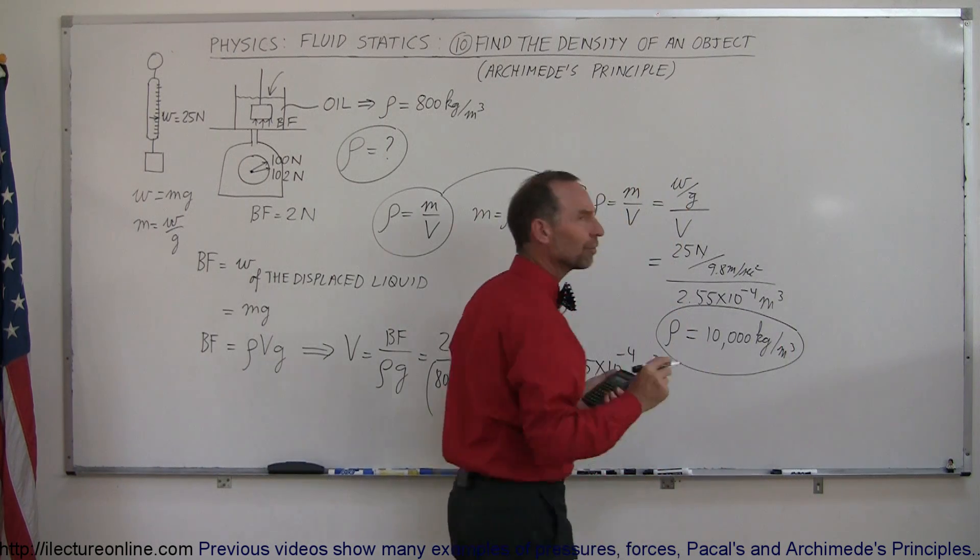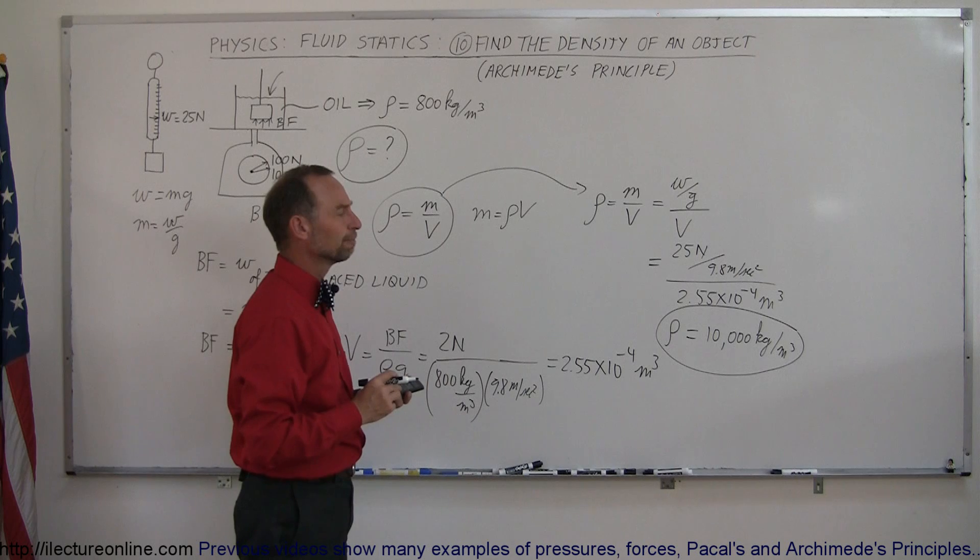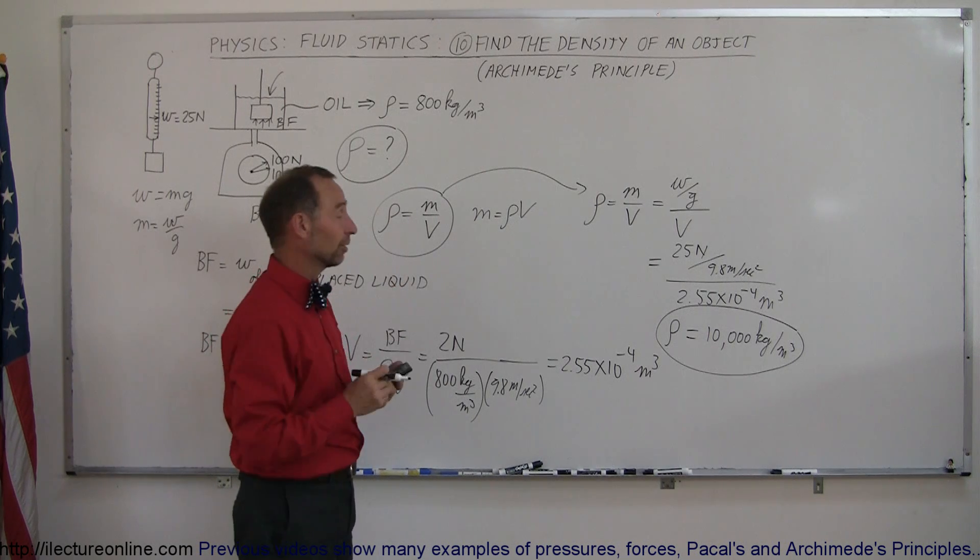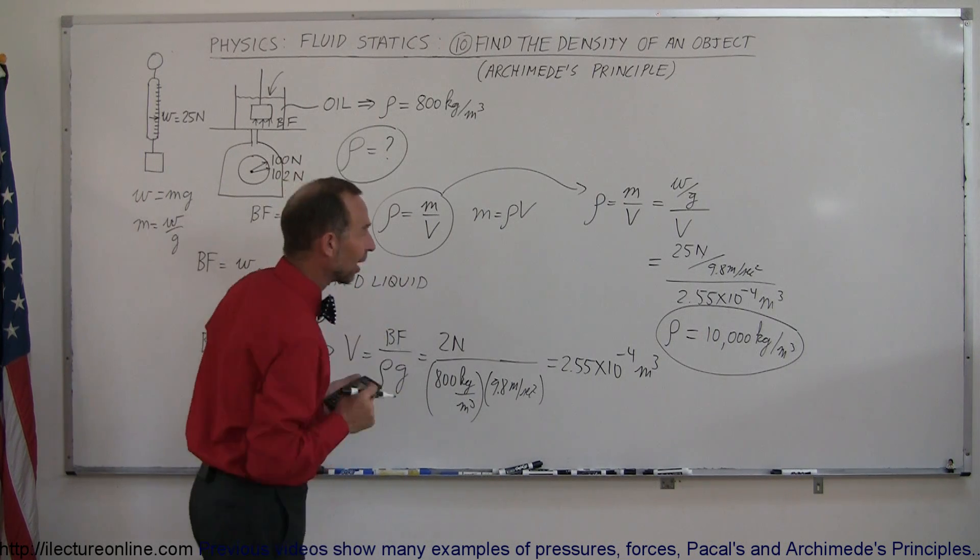Hmm. What has a density of 10,000 kilograms per cubic meter? Silver is pretty close. So maybe it's a little cube of silver. Who knows? Anyway, that's how you do that.